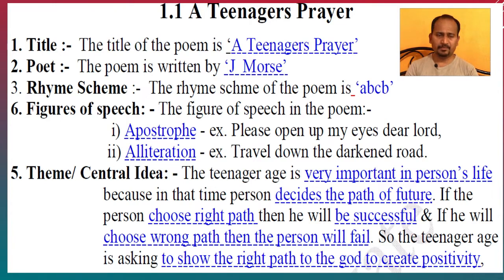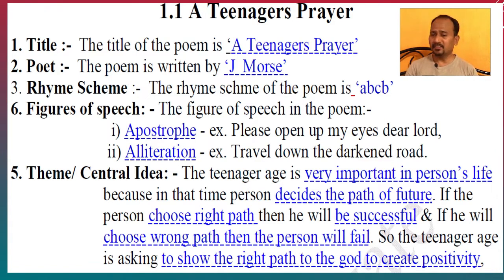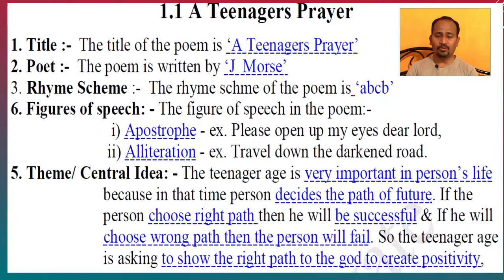Next point — the theme or central idea of this poem, worth 2 marks. The teenager age is very important in a person's life because at that time the person decides the path of their future. If the person chooses the right path then he will be successful, and if he chooses the wrong path then the person will fail. So the teenager is asking God to show the right path and create positivity.